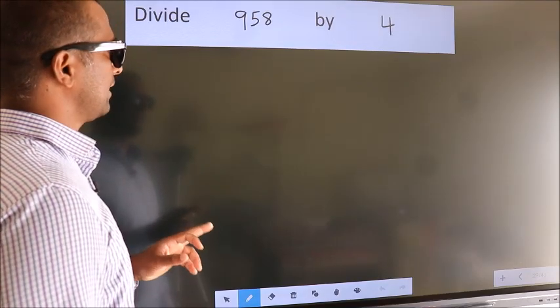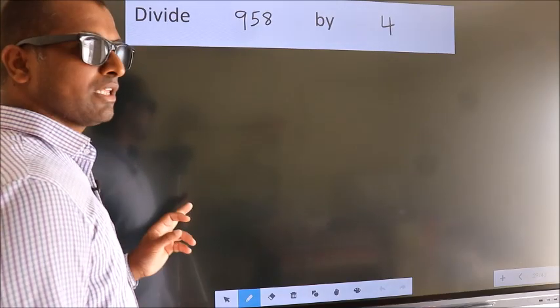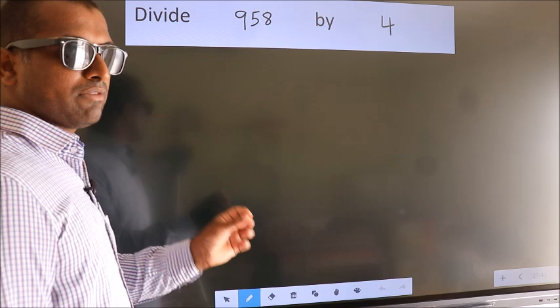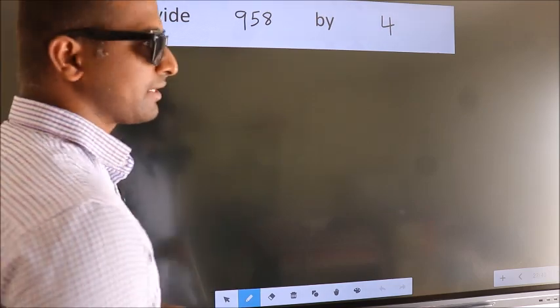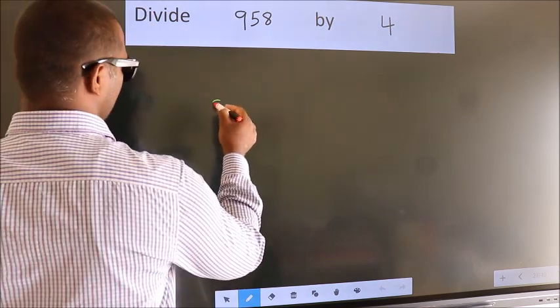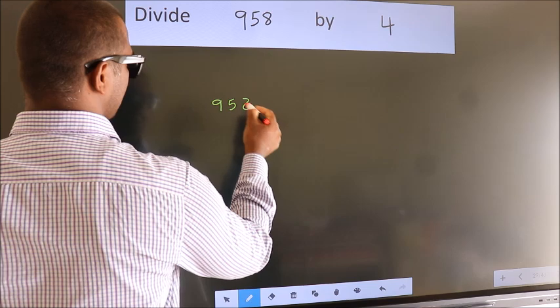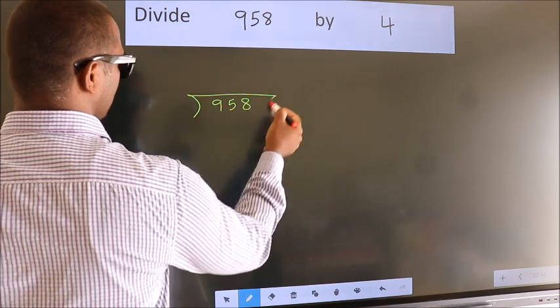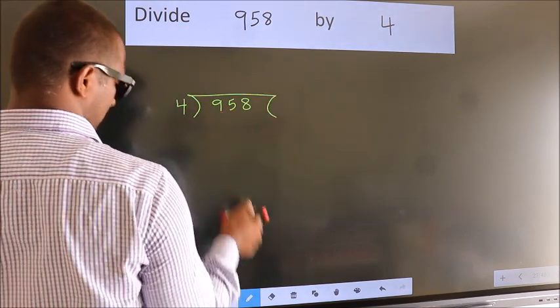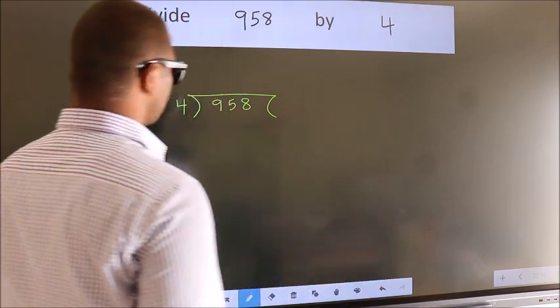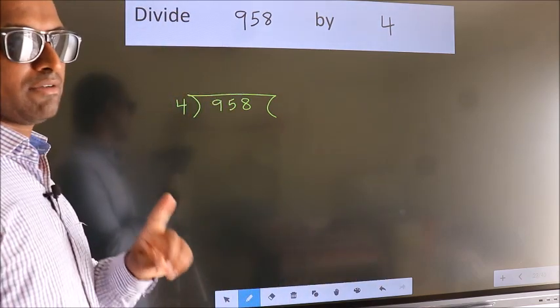Divide 958 by 4. To do this division we should frame it in this way. 958 here, 4 here. This is your step 1.